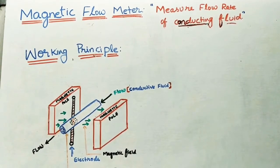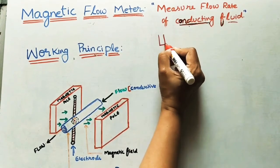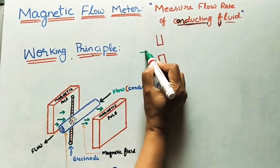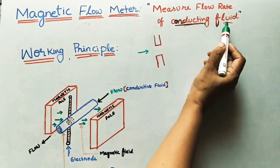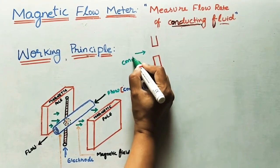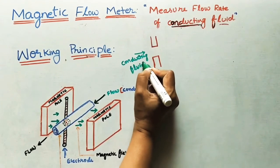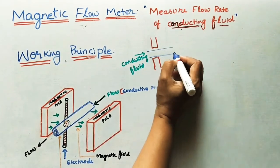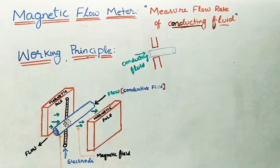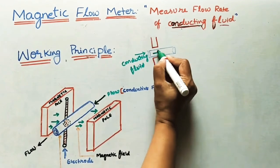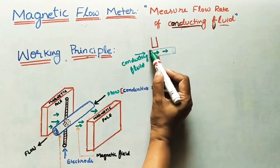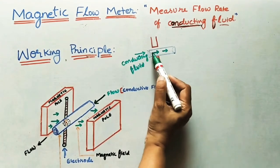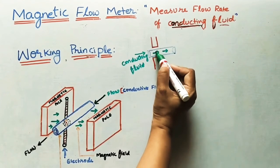For explaining the working principle, I am taking two magnets. When keeping two magnets like this, a magnetic field will generate in the gap. Now I am sending the conducting fluid in this way through a pipe. The pipe material is non-conducting — only the flowing fluid is conducting. I am sending this conducting fluid through this non-conducting pipe inside the magnetic field.